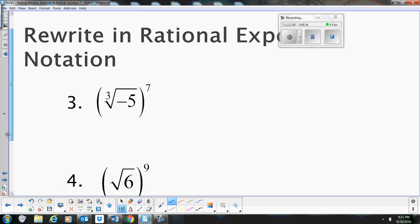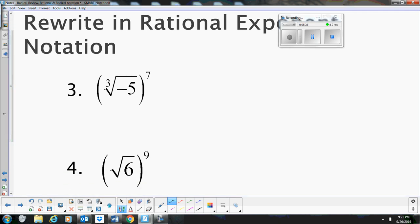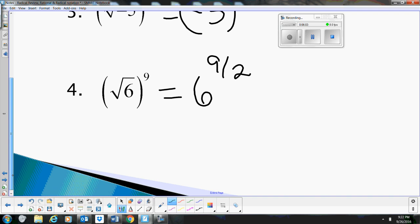Now let's practice rewriting these. These are in radicals, and we want to write them as rationals. So negative 5 quantity, because the negative 5 is under the radical, to the 7 thirds, so be careful with that negative. And then this would be a 6 to the 9 halves. So there are a couple more just to practice.